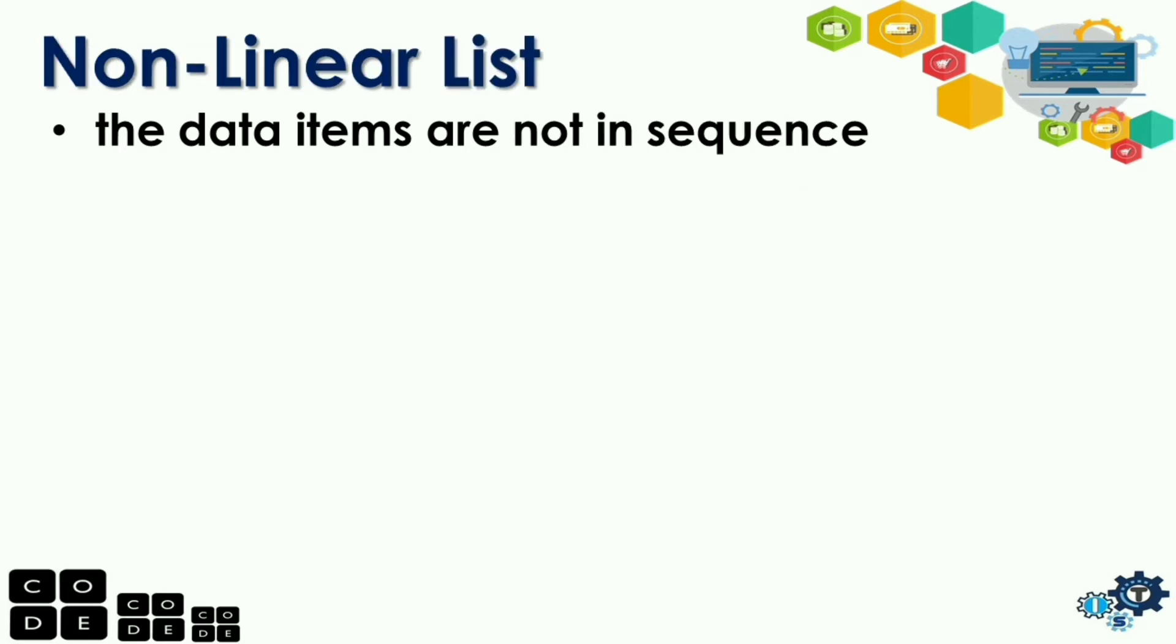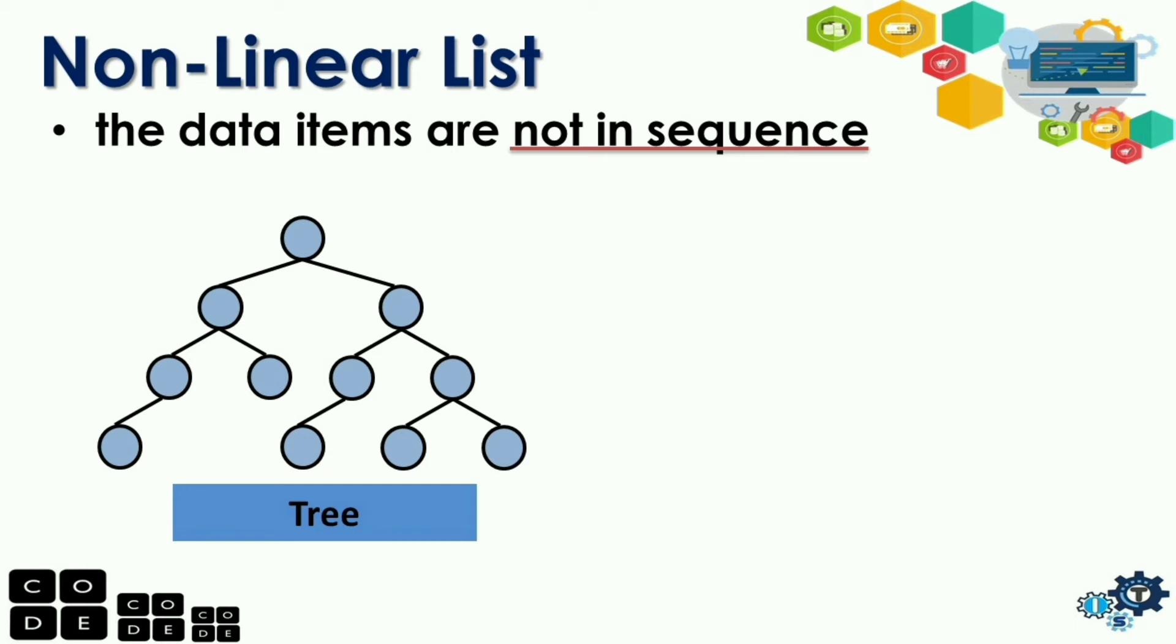For non-linear lists, these are data items that are not in sequence. So, it is the opposite of linear. So, hindi siya arranged. So, an example of non-linear list is tree and graph.